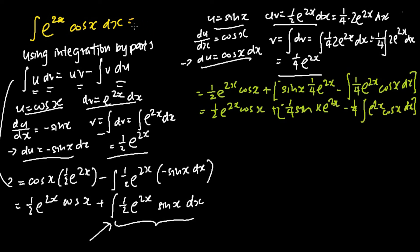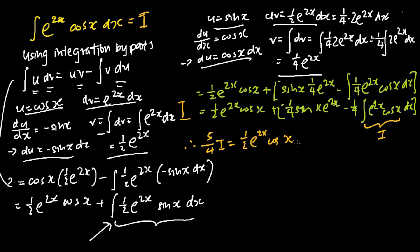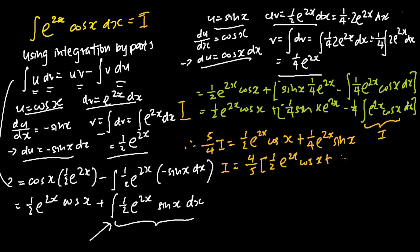If we let the original integral be equal to I, in my current solution I would have the integral e to the power of 2x cosine x dx, which I also label as I. I would then add both sides of the equation by one-quarter times the integration of e to the power of 2x cosine x dx, or one-quarter I. In the last step, in order to find my I, I divide both sides of the equation by 5 over 4. Then I expand to get the final answer, which is one-fifth e to the power of 2x times the quantity cosine x plus sine x, plus C.